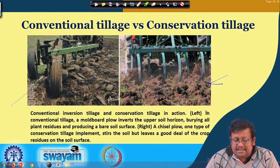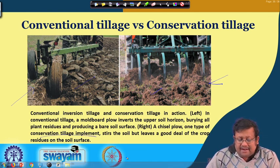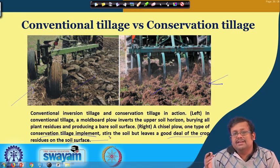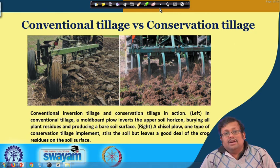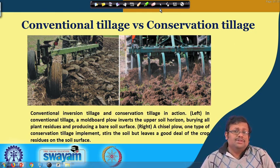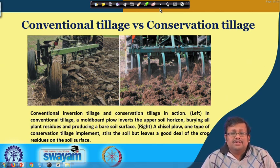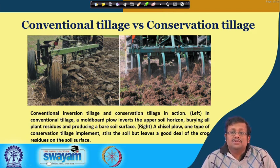On the other side, a chisel plough is one type of conservation tillage implement. It steers the soil but leaves a good deal of crop residues on the soil surface. So in conservation tillage — non-inversion tillage — we are keeping residues at the surface rather than burying them directly into the soil, so that they can reduce soil erosion and produce other beneficial effects.